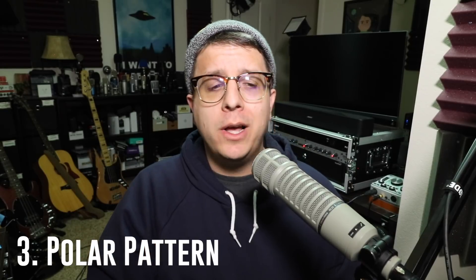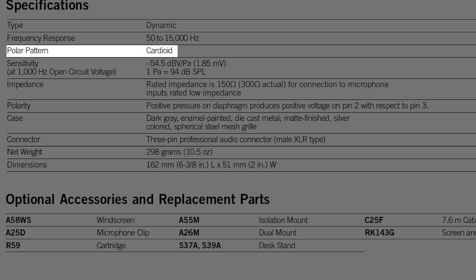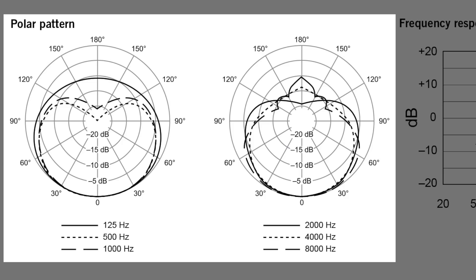Number 3: the polar pattern or directional pattern. Some of the most common here would be cardioid or omnidirectional, and it's essentially telling you what area around the microphone is going to pick up sound. Just like the frequency response, this will typically show up in two portions of the spec sheet. First, it will show up in the list — right here you can see it lists cardioid — and this gives you a general idea that the front of the microphone is where the majority of the sound will come from. The graph gives you a much better idea, as well as a breakdown of the pickup pattern for different frequencies.